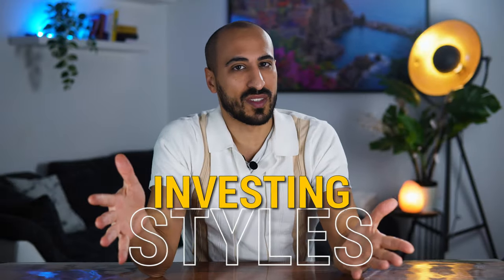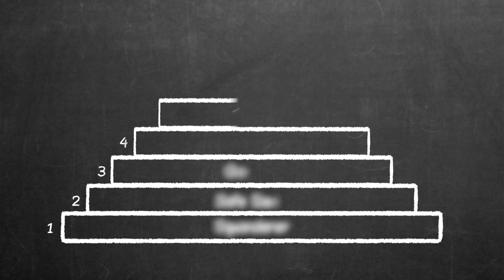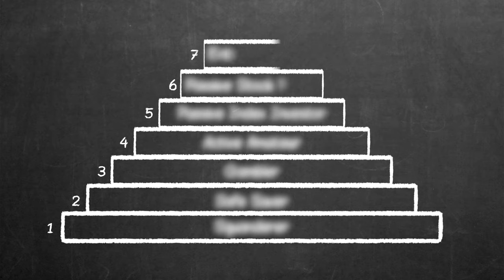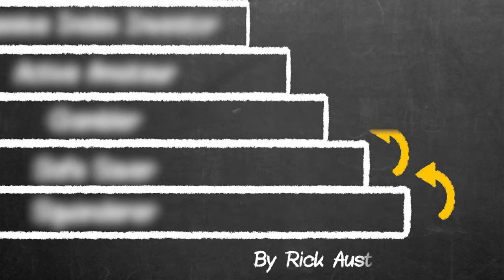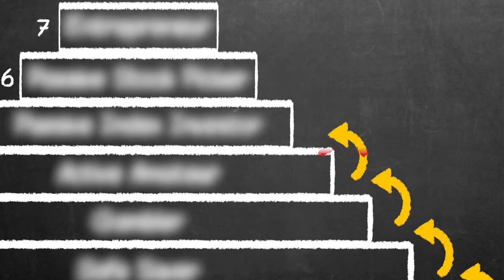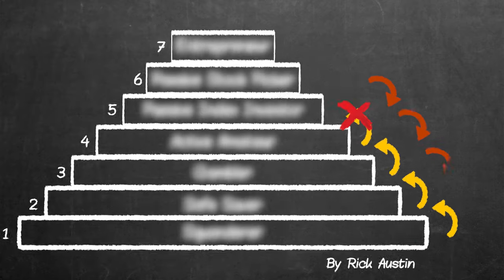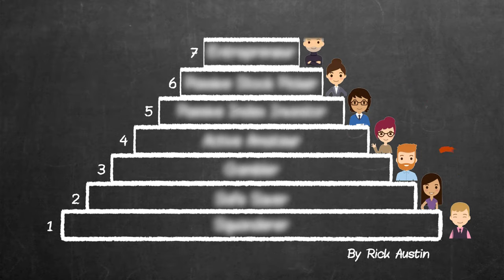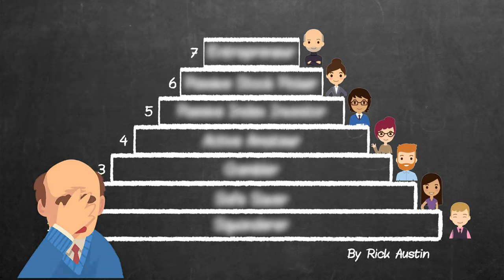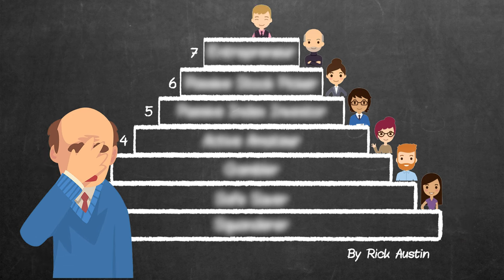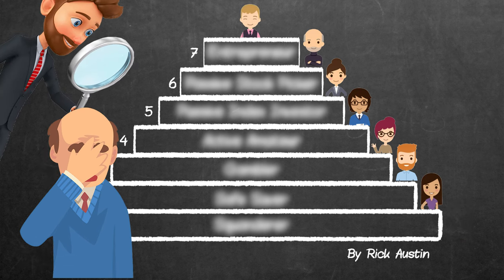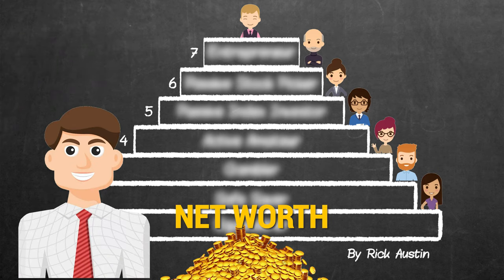When it comes to investing there are many different styles, so for today's video I created a pyramid of investing to describe seven levels of investors. Most of us stop at one level or another in life without ever reaching the top, or even fall down from one level to a lower one. But no matter which investor you are, we should all aspire to get to the top because your potential net worth is directly related to where you are on the pyramid.